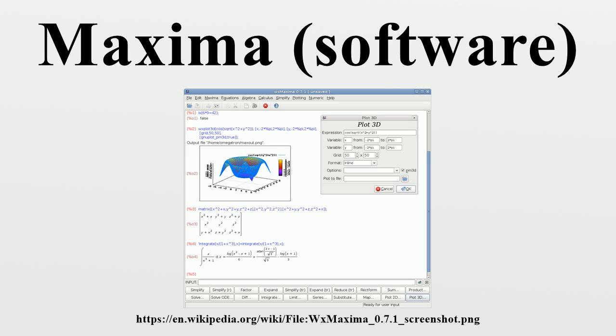Features: Maxima includes a complete programming language with ALGOL-like syntax but LISP-like semantics. It is written in Common LISP and can be accessed programmatically and extended, as the underlying LISP can be called from Maxima.